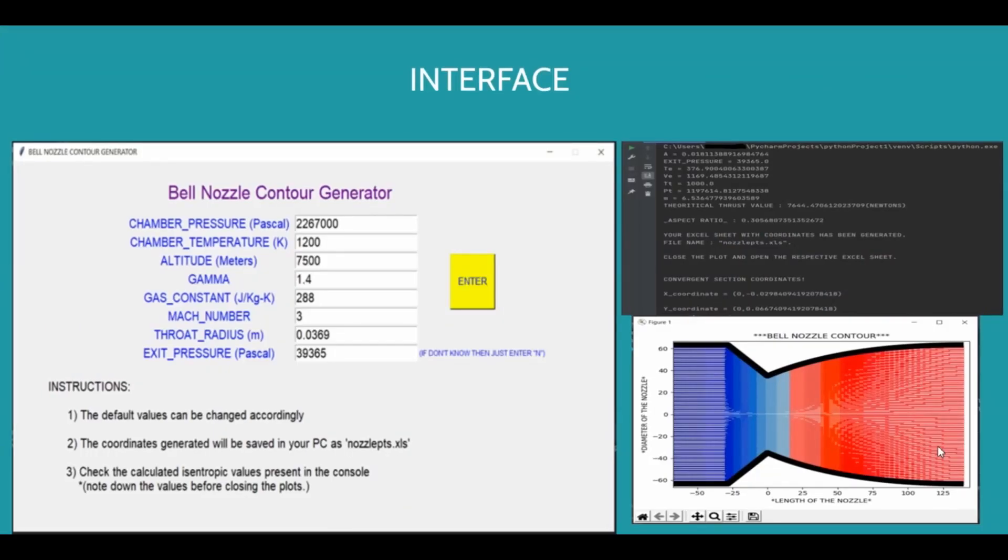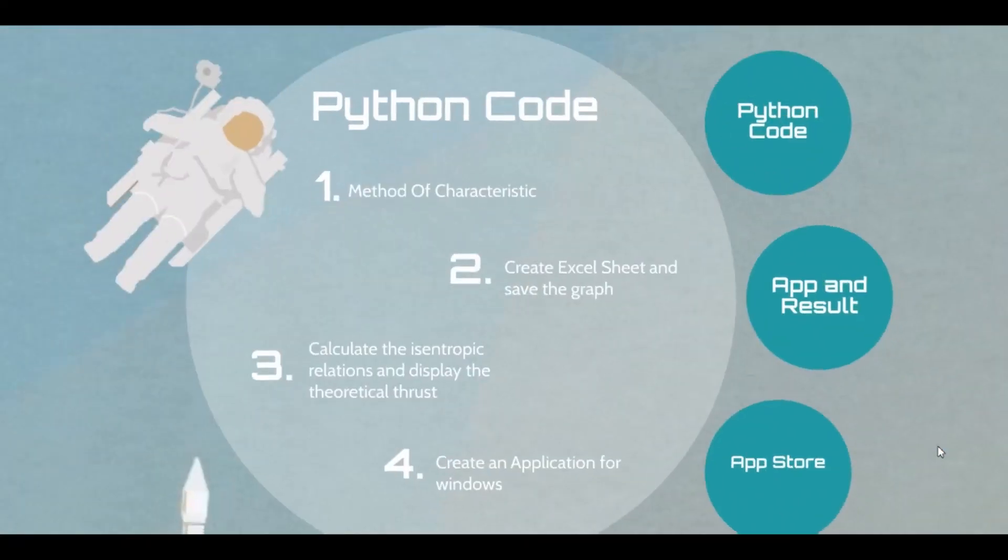Once you run the application, you will find a user canvas which will look like this, where you can give your inputs. Based on the inputs, it will calculate the theoretical thrust. The coordinates of the bell nozzle will be saved in your system as nozzlepts.xls. You can use those coordinates to generate a CAD part.